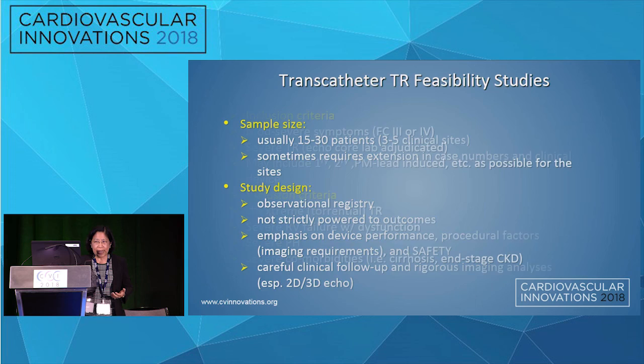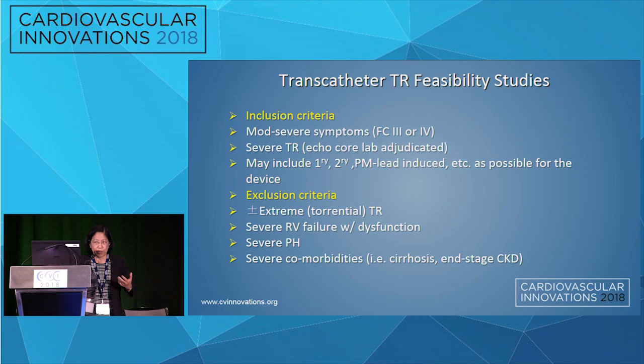In terms of pivotal trial design, we're looking at the same effectiveness measures by echo — though learning more about RV function and remodeling — along with biomarkers for liver and renal function. Hard endpoints may include combinations and composites of death, re-hospitalization, and freedom from repeat procedures. Timing of intervention is difficult because we don't fully understand severe TR or how to grade it, but we're working on it.